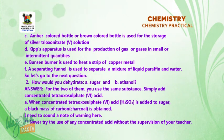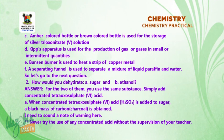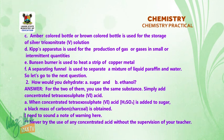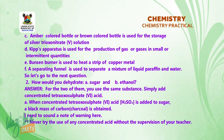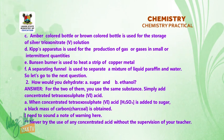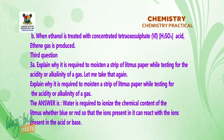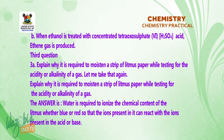How would you dehydrate sugar and ethanol? For the two of them, you use the same substance — you simply add concentrated tetraoxosulfate(VI) acid. When concentrated tetraoxosulfate(VI) acid is added to sugar, a black mass of carbon — charcoal — is obtained. Never try the use of any concentrated acid without the supervision of your teacher. When ethanol is treated with concentrated tetraoxosulfate(VI) acid, ethene gas is produced.